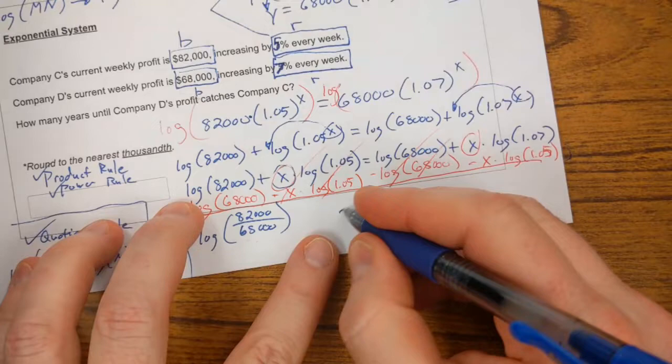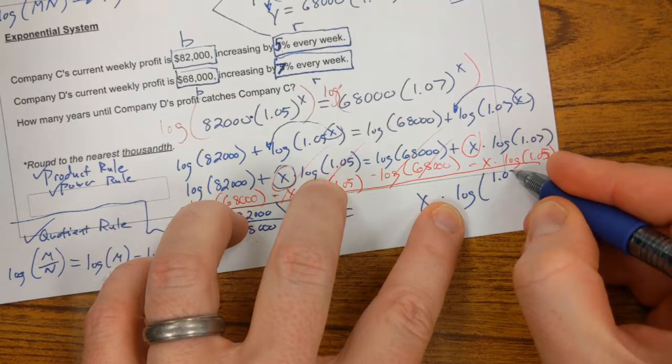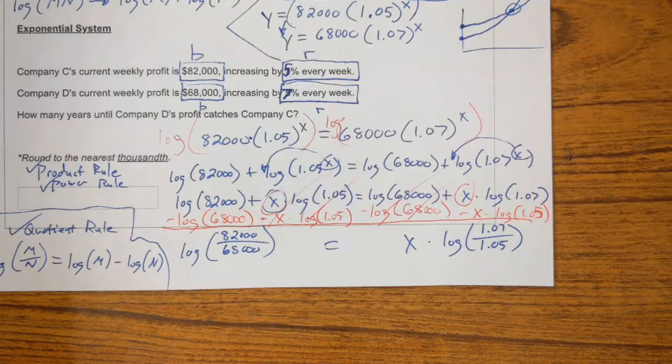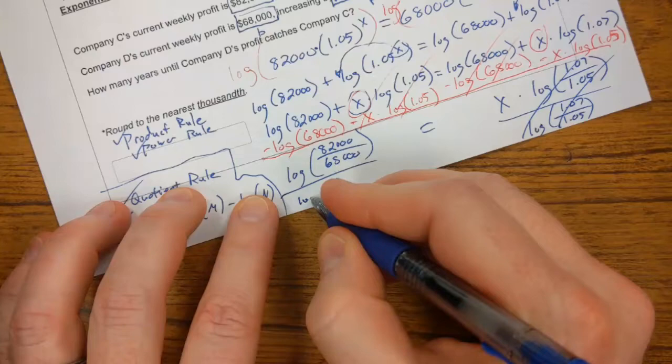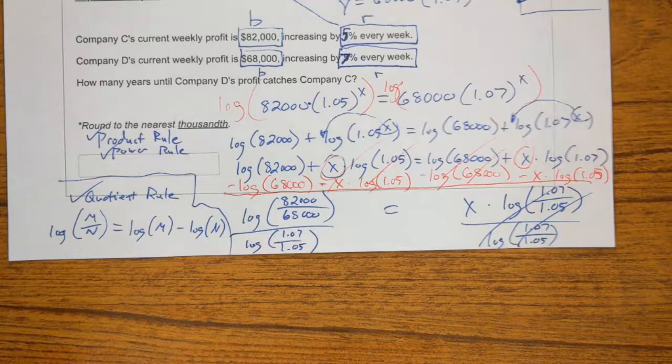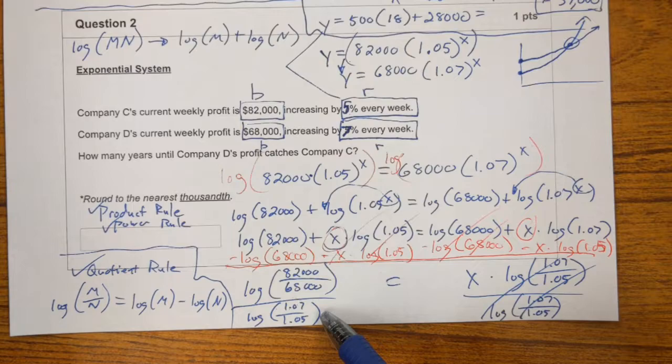Likewise, I'm going to subtract this x times the log of 1.05 from both sides. And over here on the right, we're going to have x times the log of 1.07 divided by 1.05. So my last step then to solve for x, I'm going to divide this log of 1.07 over 1.05 from both sides. So this is my final step. I need to find some way to divide all of this, divided by all of this. And this gives me the answer. We can do this. This doesn't look too bad.